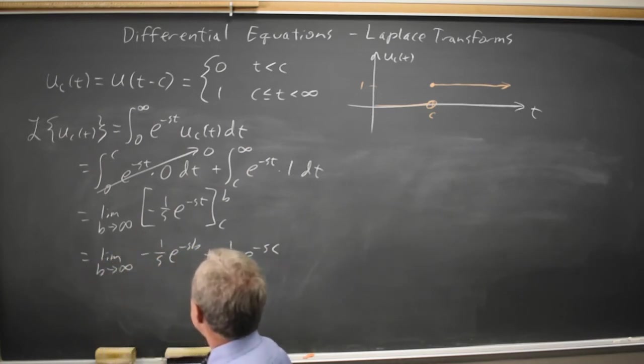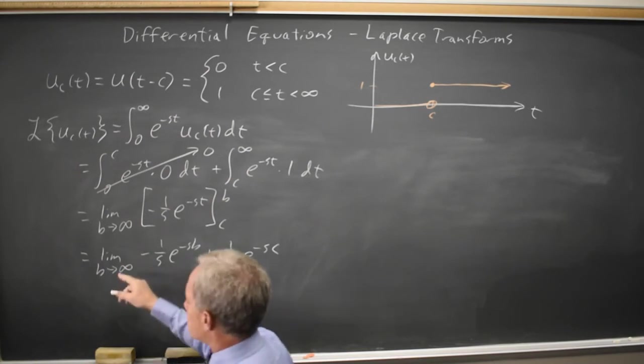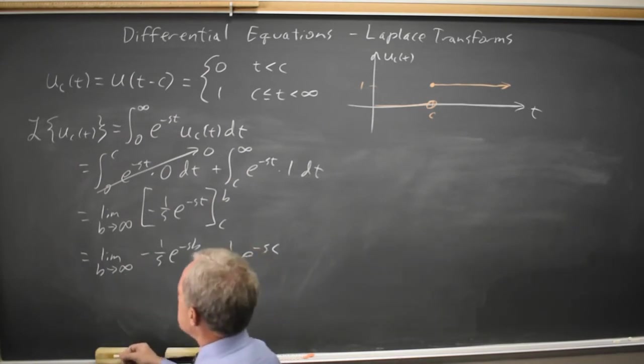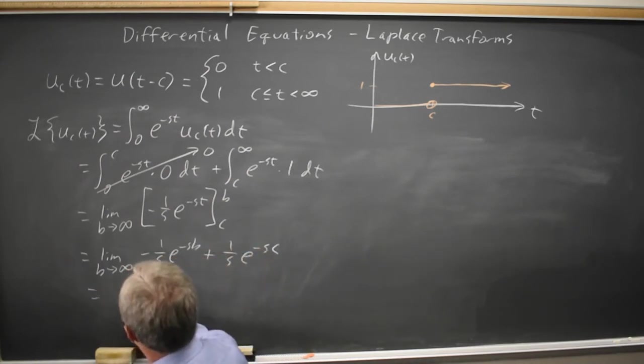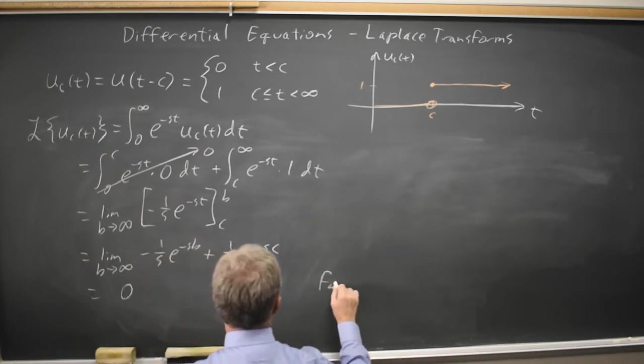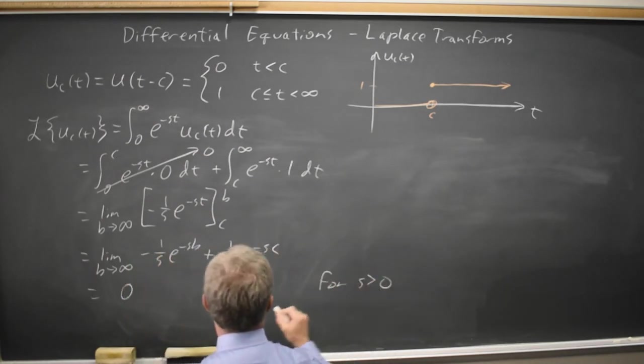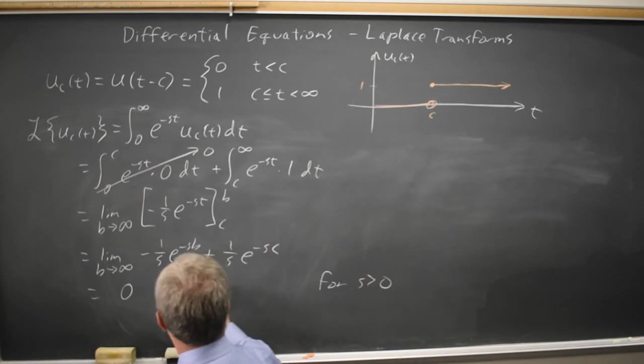Now as b goes to infinity, this first term goes to zero if s is greater than zero. So we need that restriction. And the second term is one over s, e to the negative sc.